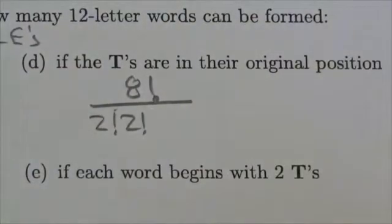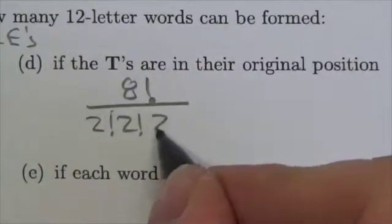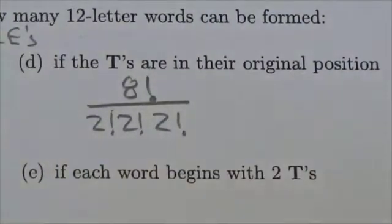Now forget about the T's. I have no control over the T's. They stay where they are. There's not something I can manipulate, so ignore them. But I still have two E's left over.